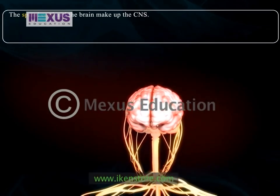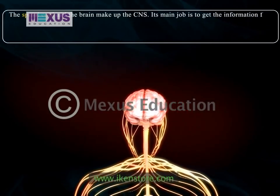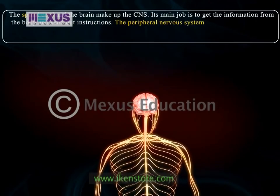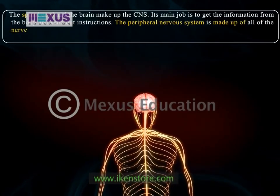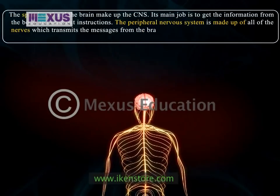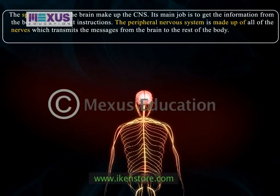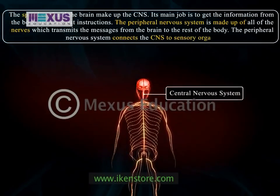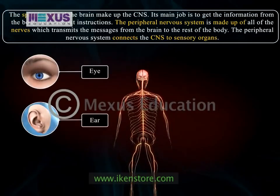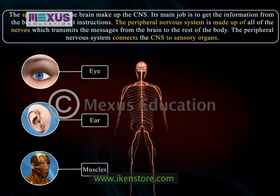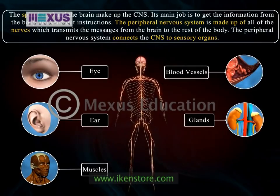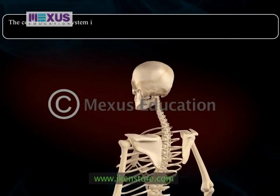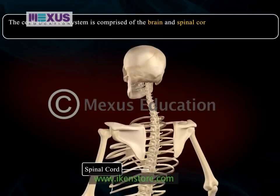The spinal cord and the brain make up the CNS. Its main job is to get information from the body and send out instructions. The peripheral nervous system is made up of all the nerves which transmit messages from the brain to the rest of the body. The peripheral nervous system connects the CNS to sensory organs such as the eye and ear, other organs of the body, muscles, blood vessels, and glands.